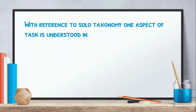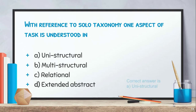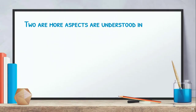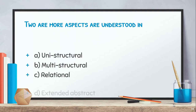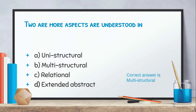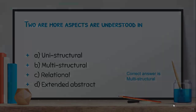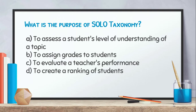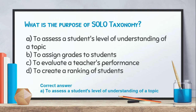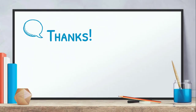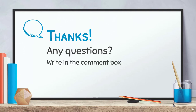With reference to SOLO taxonomy, one aspect of a task is understood at the uni-structure level. Two or more aspects are understood at the multi-structure level. The purpose of SOLO taxonomy is to assess students' level of understanding of a topic — not to assign grades, evaluate teacher performance, or create rankings. Thank you for listening and I hope you found this lecture informative. If you have any questions, write in the comment box. Thank you so much.